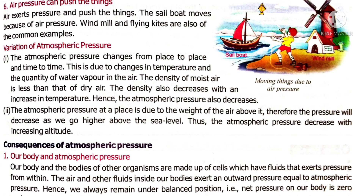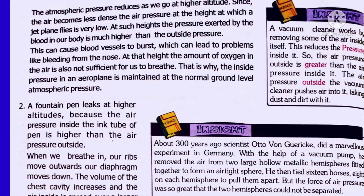Blood and air inside our body exert outward pressure equal to atmospheric pressure, so inside and outside pressure remain equal — that is why we survive. If our body pressure were more, fluids and blood would be pushed out through the nose and mouth. We are normal because inside pressure and outside pressure remain the same. We can conclude that the net pressure on our body is zero because inside pressure and outside pressure are equal, so the net force on our body is zero.